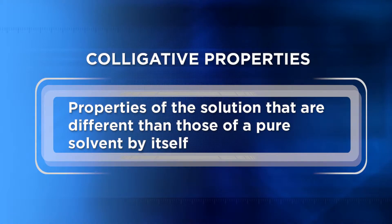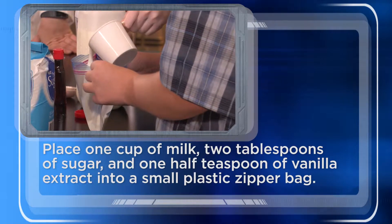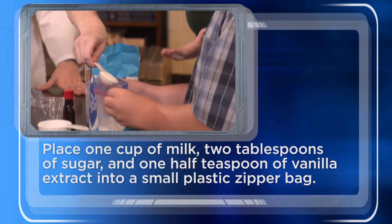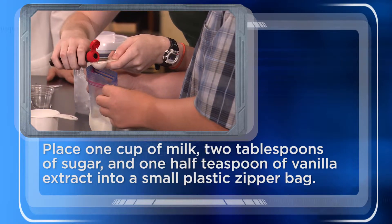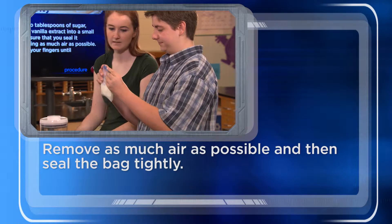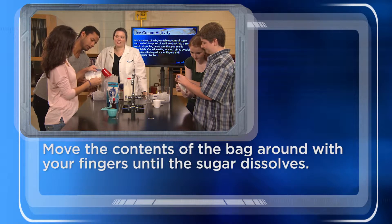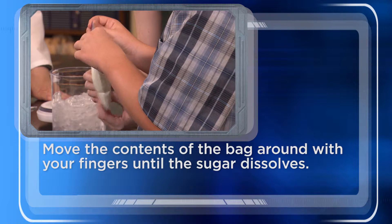For this activity, we're actually going to conduct a delicious investigation of colligative properties by creating some homemade ice cream. Colligative properties are properties of a solution, like the freezing point, that are different than what the property would be if it were just the solvent alone. Each team will place one cup of milk, two tablespoons of sugar, and one half teaspoon of vanilla extract into a plastic zipper bag. Get as much air out of the bag as possible and then seal it tightly. Move the contents of the bag around with your fingers until the sugar dissolves.